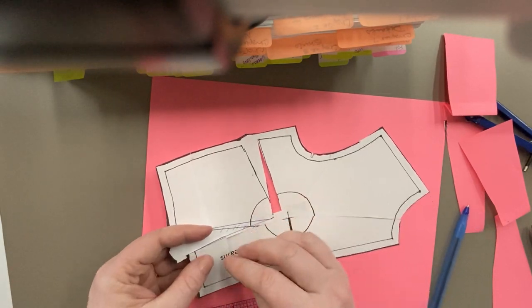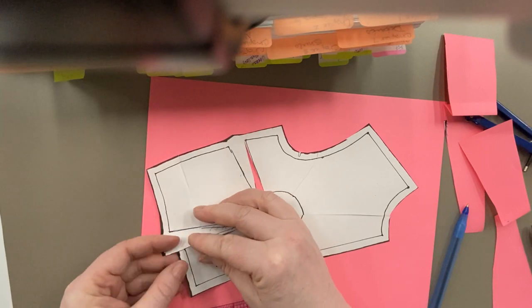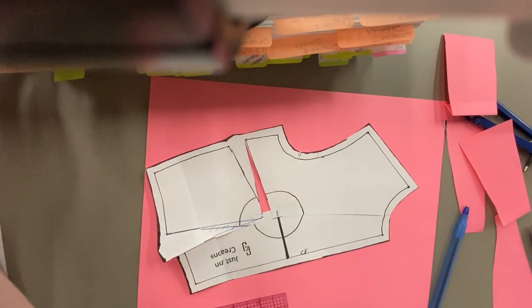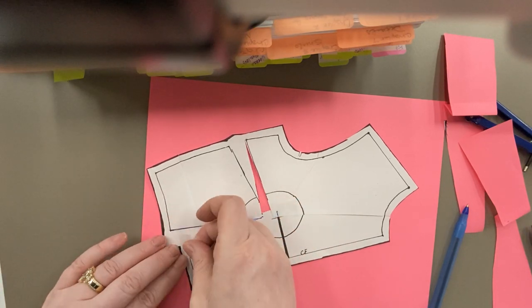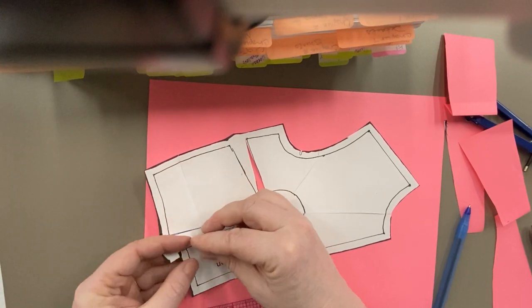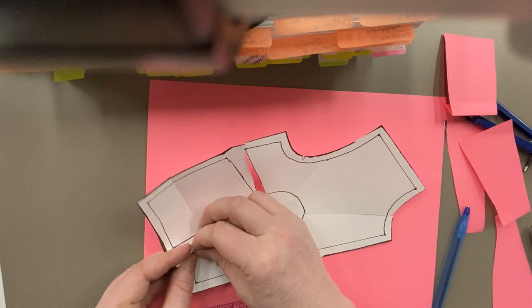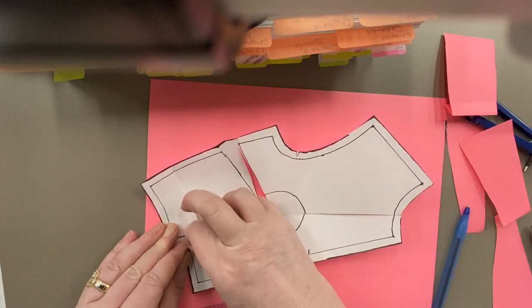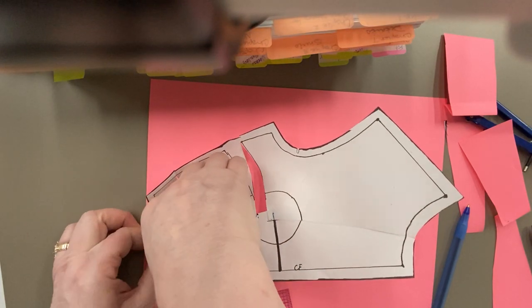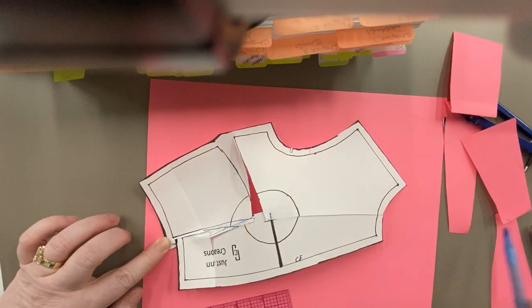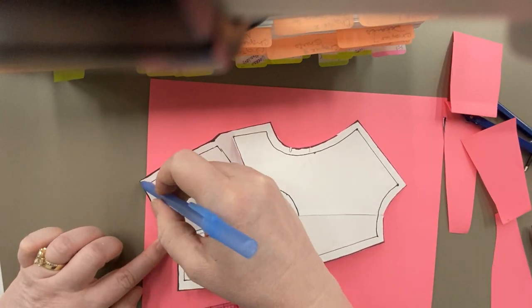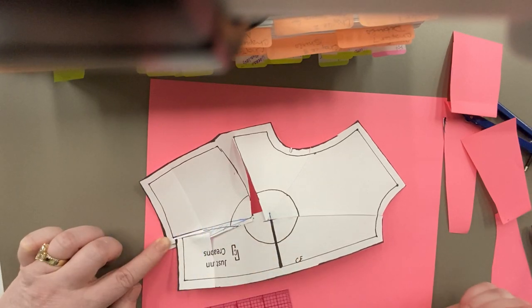I need to fold my dart and it's going to be kind of delicate now. You have to be careful with your tape. I'm going to fold this dart so that I can clean up my seam lines. Draw a new seam line, new cut line. Cut that while it's folded.